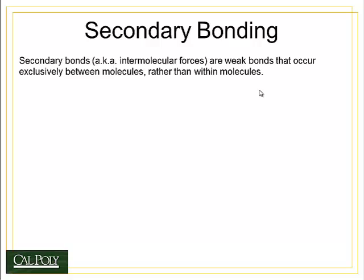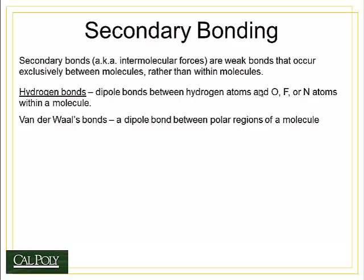Secondary bonds also occur in polymers and are very important to their properties. Secondary bonds are also known as intermolecular forces — they are always weak bonds that occur between molecules, not within a molecule. The most important types for polymers are hydrogen bonds, which are dipole bonds between hydrogens and atoms of oxygen, fluorine, or nitrogen, and van der Waals bonds, which are dipole bonds between polar regions of a molecule — sometimes caused by vibrations that create slight, induced dipoles.